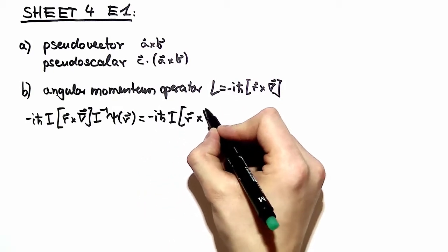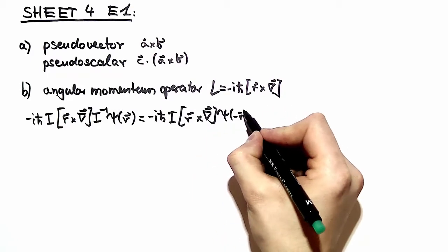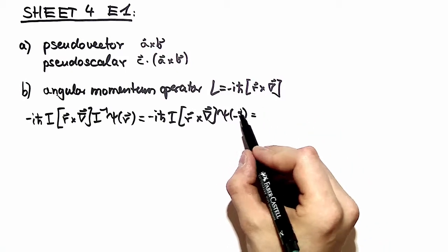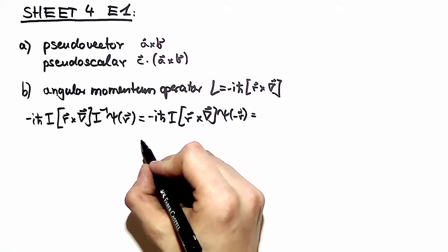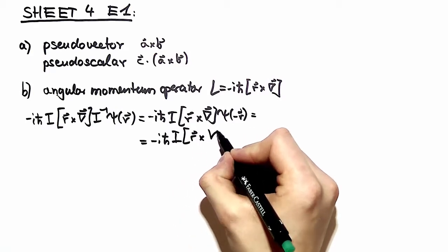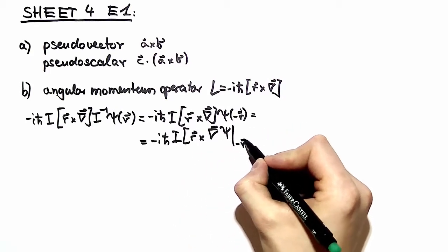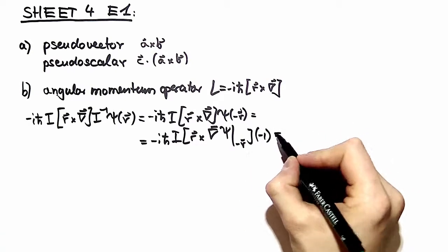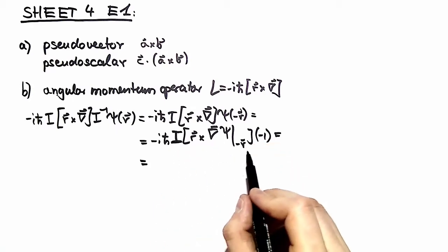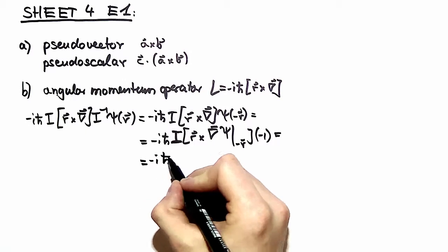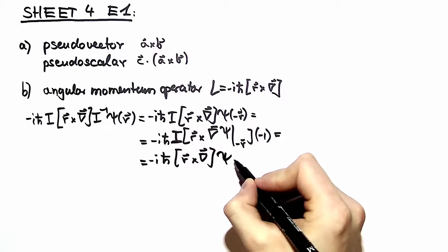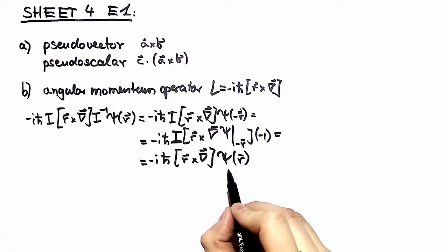You have the inversion operator applied on the wave function psi, and you have minus the inversion to the minus one, but it doesn't make any difference. You have minus r in the argument of the wave function. Then you apply the nabla operator and do the chain rule on that. You obtain a minus one, and when applying the inversion operator, you obtain again a minus one because of the property of the cross product. You end up with the angular momentum operator acting on the wave function psi.